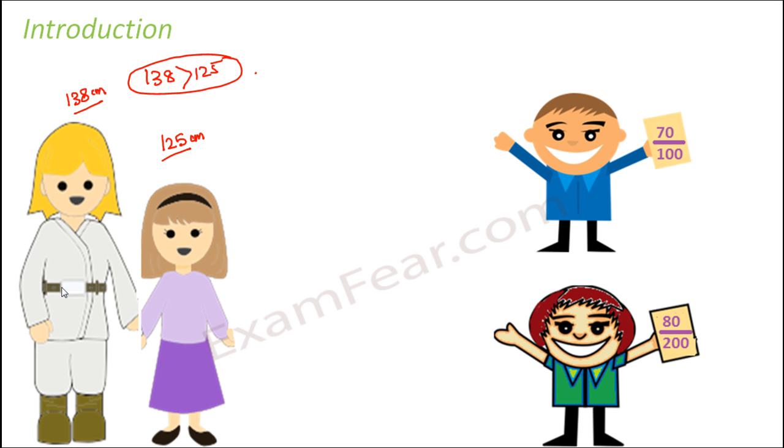Now let us take one more example. Let us say there are two kids A and B. A scored 70 out of 100 in his examination and B scored 80 out of 200 in his examination. Now looking at the scores, you might think that B scored more because B scored 80 and A scored 70, right? But we just can't compare their scores.